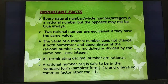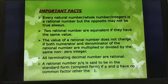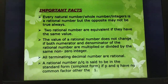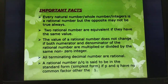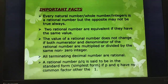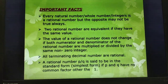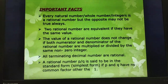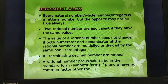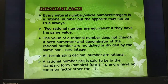Two rational numbers are equivalent if they have the same value. The value of a rational number does not change if both the numerator and denominator are multiplied or divided by the same non-zero integer. Also, all terminating decimal numbers are rational. A rational number P/Q is said to be in standard form or simplest form if P and Q have no common factor other than 1.